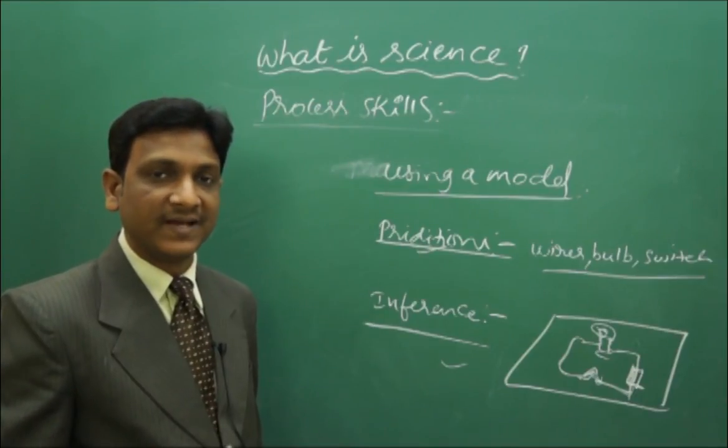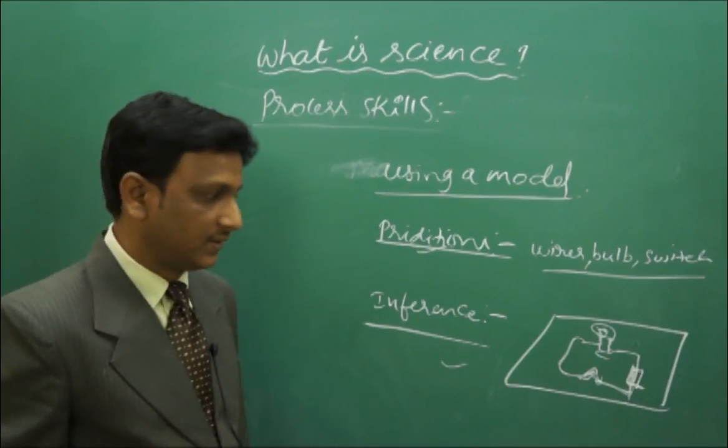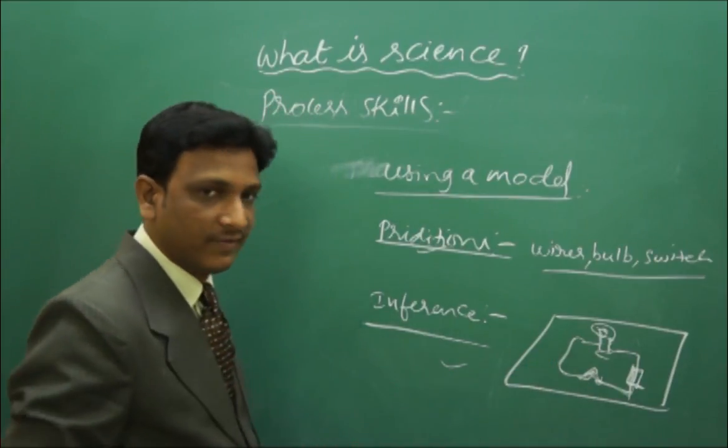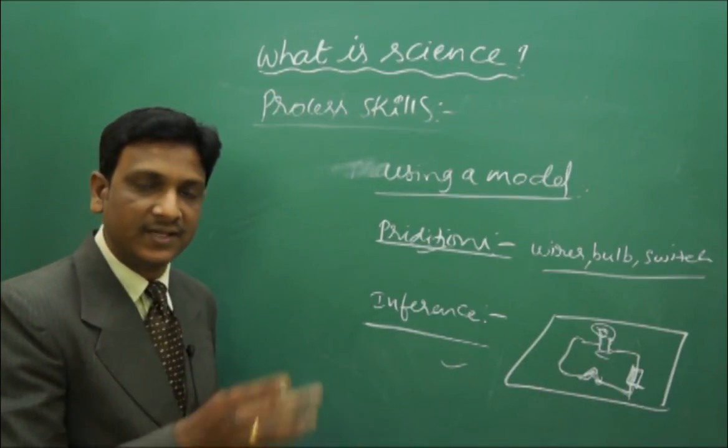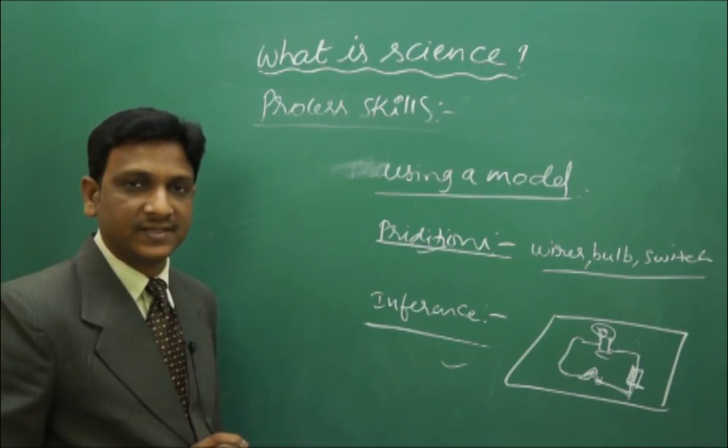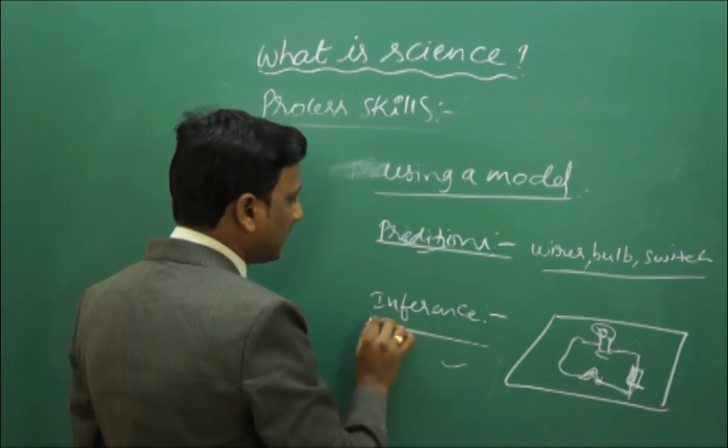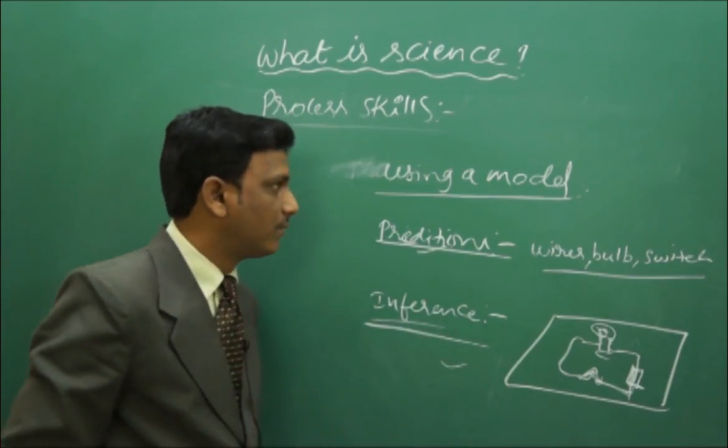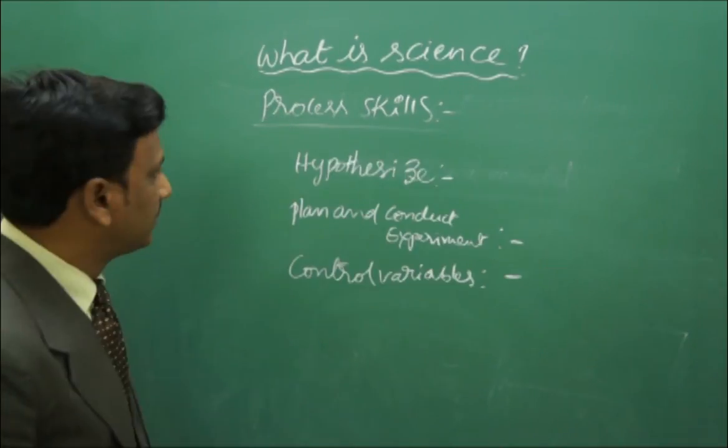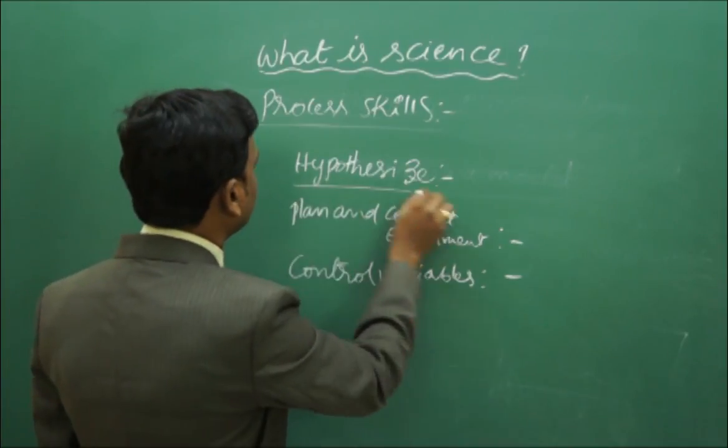How we are explaining our prediction with an inference, with the logic. See, if it is disconnected, there is no flow of electricity. See, if this is connected, there is flow of electricity. That is the inference. Here the prediction and inference, both are proved by using a model.